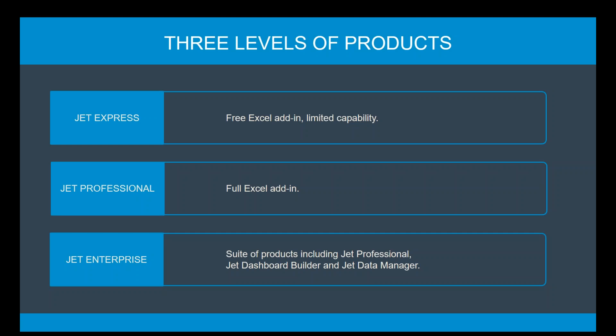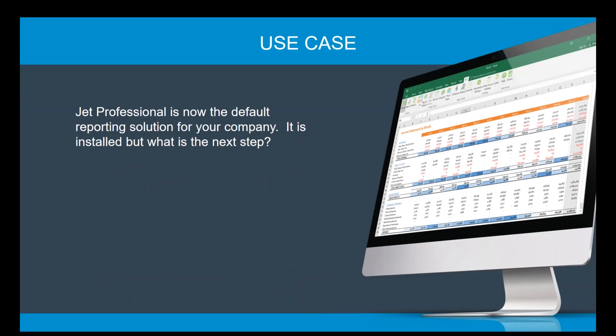Then we've got Jet Enterprise, which takes it one step further. It's a suite of products — it includes Jet Professional plus the Jet Dashboard Builder and the Jet Data Manager. When you go to write reports, you're still using Jet Professional in Excel. Jet Enterprise encompasses both the front end and the back end of our solutions. It's important to know these three differences, and that leads us into our use case: Jet is now the default reporting solution for your company. It's installed on your machine. What do you do next?